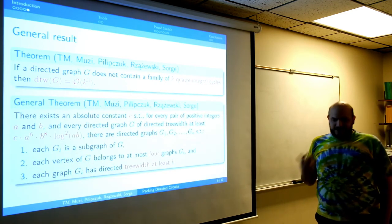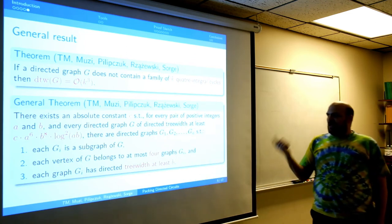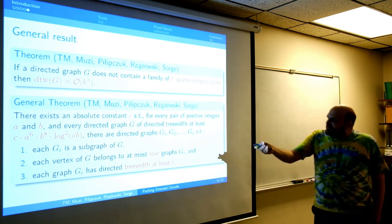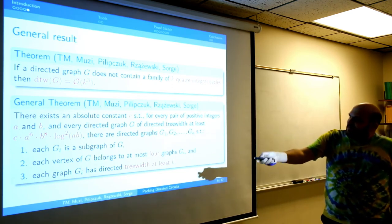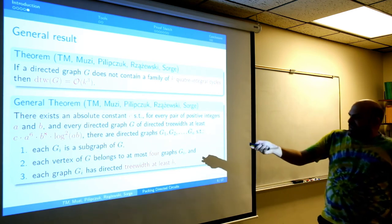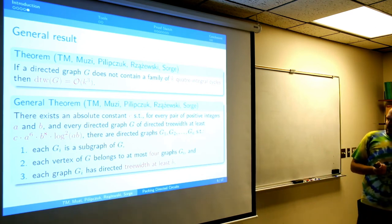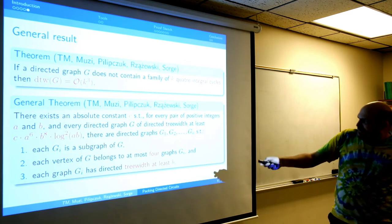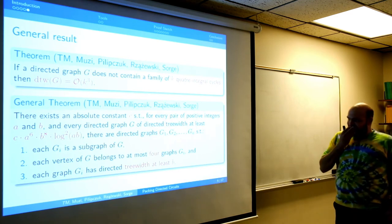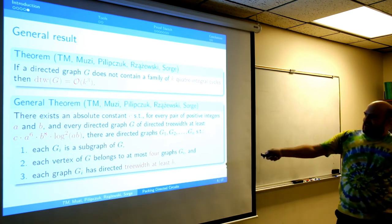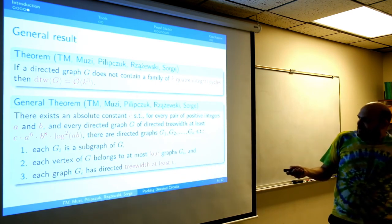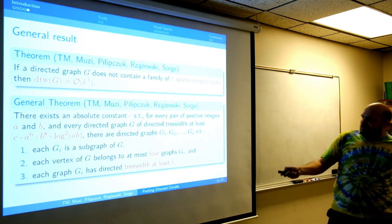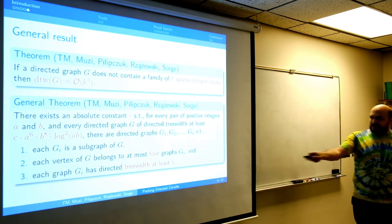I will show you something more general. We prove a decomposition theorem: there is some constant such that for integers A and B, every directed graph G of directed treewidth at least some polynomial can be decomposed into A subgraphs such that each subgraph doesn't overlap much — each vertex can see at most four such subgraphs — and each subgraph has large directed treewidth, at least B.